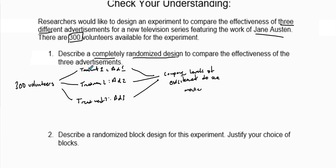The key thing is that when we assign treatments, we need random assignment. We randomly assign 100 volunteers to this group, 100 to this group, and 100 to this group. So 100 would receive Ad 1, another 100 would receive Ad 2, and another 100 would receive Ad 3, and then we compare them.